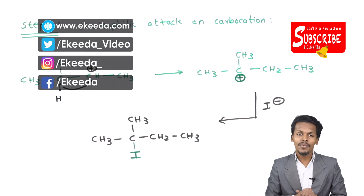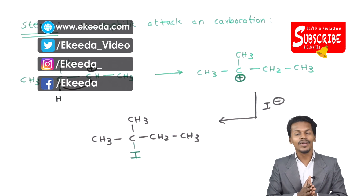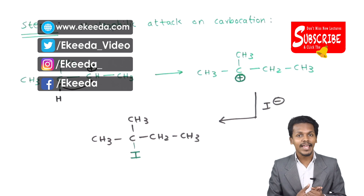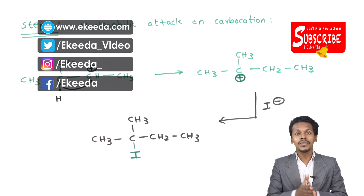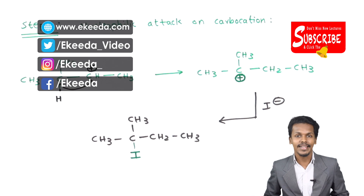The name of step 3 is: nucleophilic attack on carbocation. This is how we have discussed the mechanism of this reaction. Thank you for watching this video. I hope you understood this reaction clearly. Please subscribe to our channel.